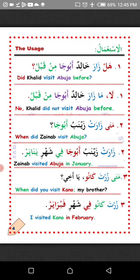Number two: Mata zharat Zaynab Abuuja? When did Zaynab visit Abuuja? The answer: Zharat Zaynab Abuuja fi shahar Yanayir — Zaynab visited Abuuja in the month of January. Note: shahar means month.